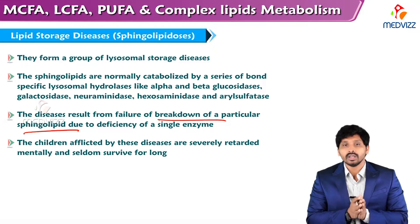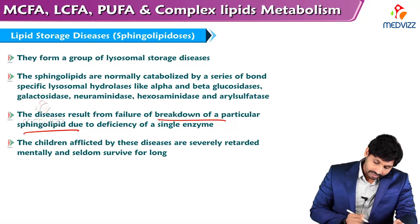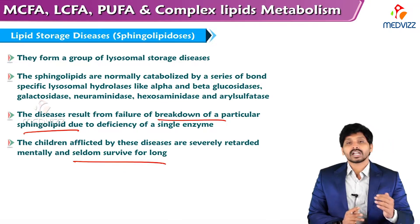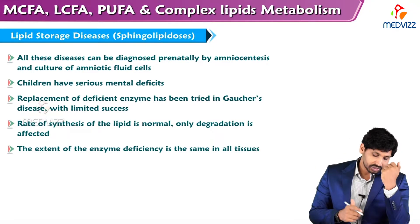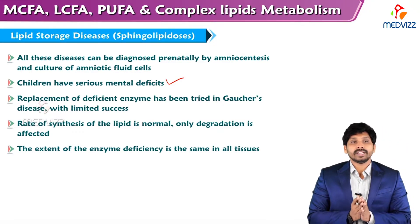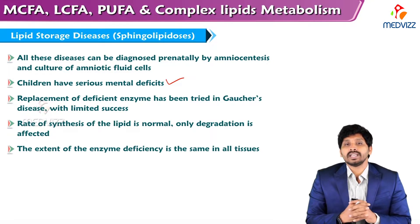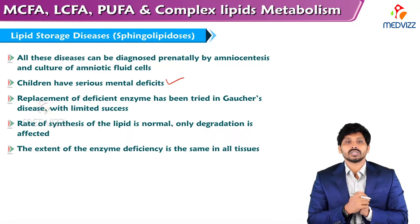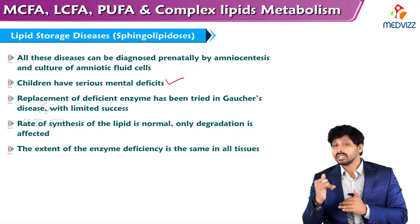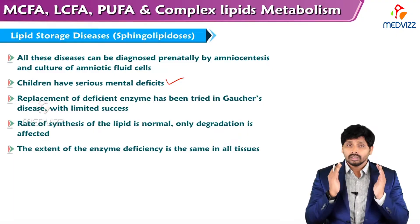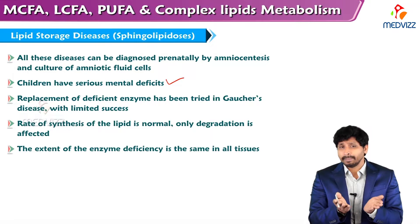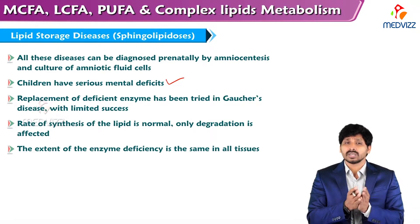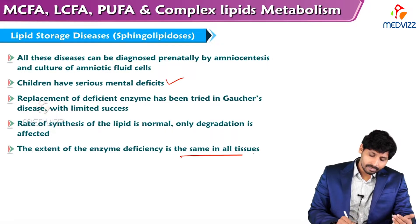The diseases result from failure of breakdown of particular sphingolipids due to deficiency of a single enzyme. The children affected by these diseases are severely mentally retarded and seldom survive for long. All these diseases can be diagnosed prenatally by amniocentesis and culture of amniotic fluid cells. Children have serious mental deficits.